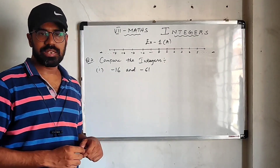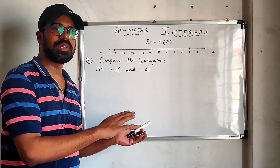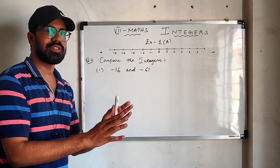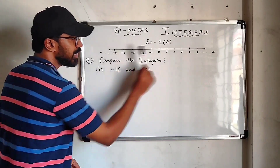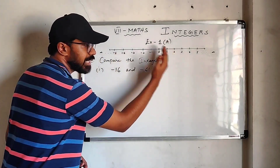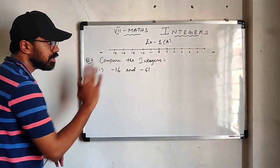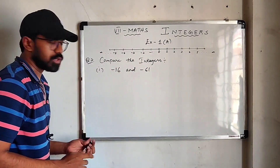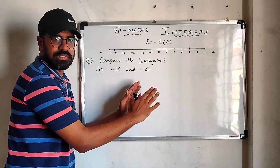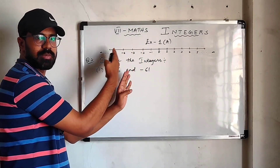Question number 2: compare the integers. Here you will be given two integers and asked to compare them — meaning which is the bigger number and which is the smaller number. You know that the right number is always greater than the left number on a number line, and positive numbers along with 0 are always greater than negative numbers. Now consider minus 16 and minus 61 — both are negative integers. If we travel towards the left of the number line, we first reach minus 16, then minus 61.